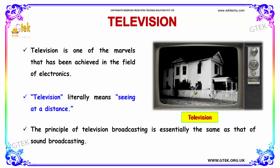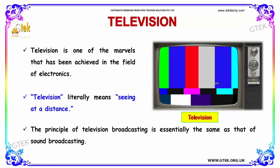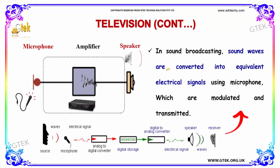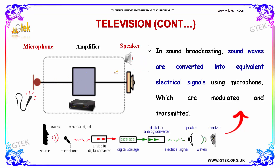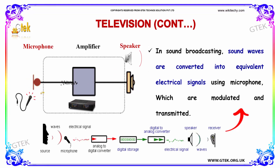The principle of television broadcasting is essentially the same as that of sound broadcasting. In sound broadcasting, the sound waves are converted into equivalent electrical signals using microphones, which are modulated and then transmitted.